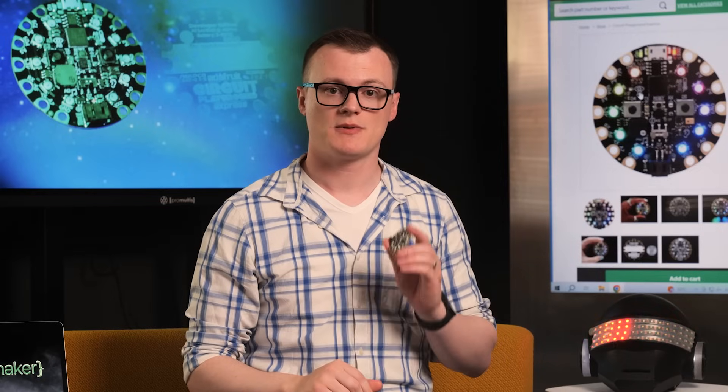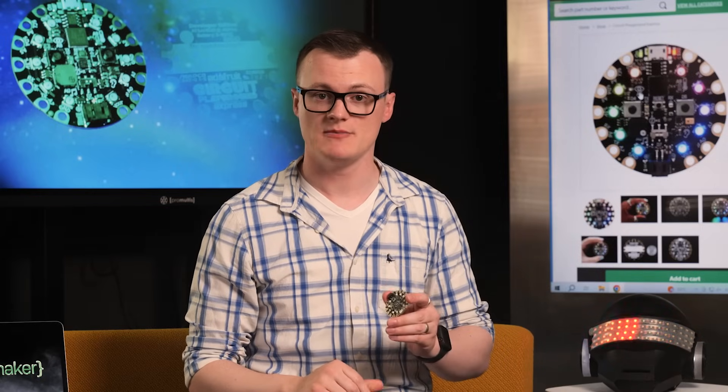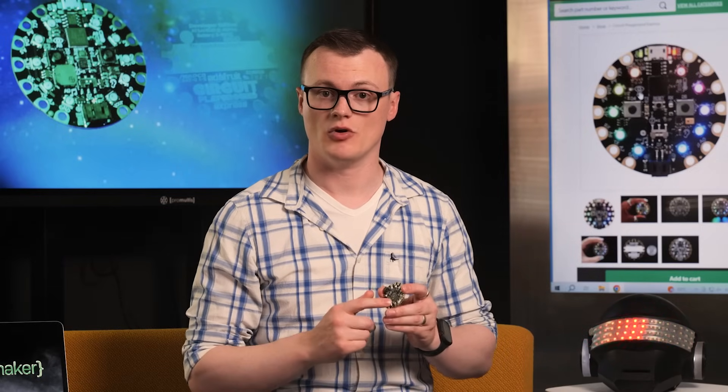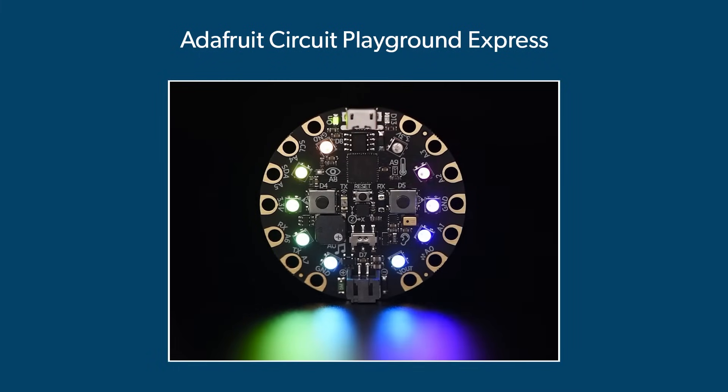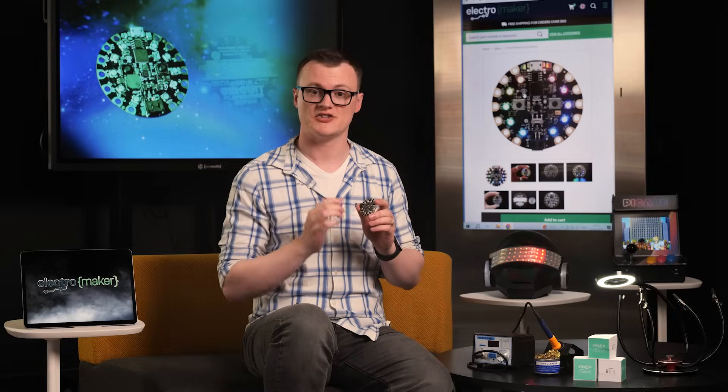The Adafruit Circuit Playground could also be used as a simple game machine, using the lights and onboard buttons as the interactive elements. For example, a memory game can be made where a specific flashing sequence of lights has to be copied via the capacitive touch inputs, or a light wheel that spins and needs to be stopped at the right time.